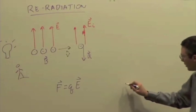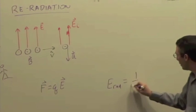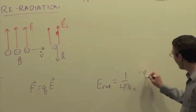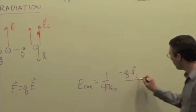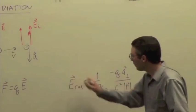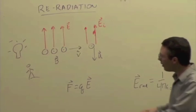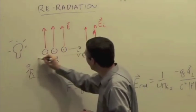Remember, the direction is given by negative Q times A perpendicular. So we have an acceleration that way. Let's say our r vector is maybe back towards us, towards the original source.